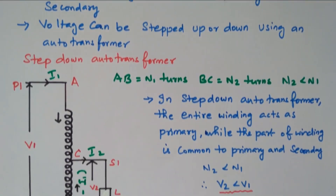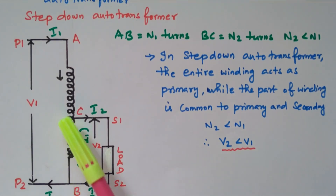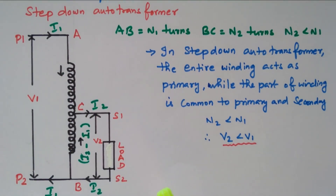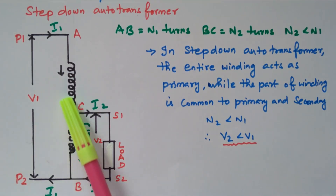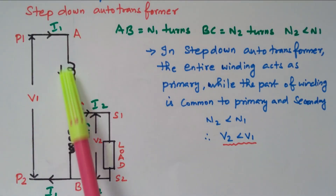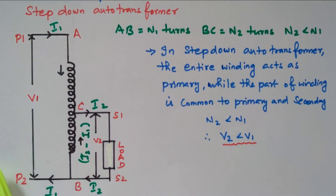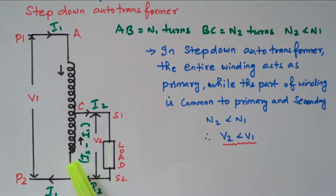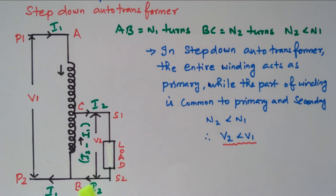Now we will look at the step-down transformer configuration. The auto transformer has only one winding. The entire winding is used as the primary — terminals P1 and P2 refer to the primary winding. The secondary winding is a part of that winding, using terminals S1 and S2. This portion is commonly shared between primary and secondary. So the entire winding is primary, and part of the winding is secondary.